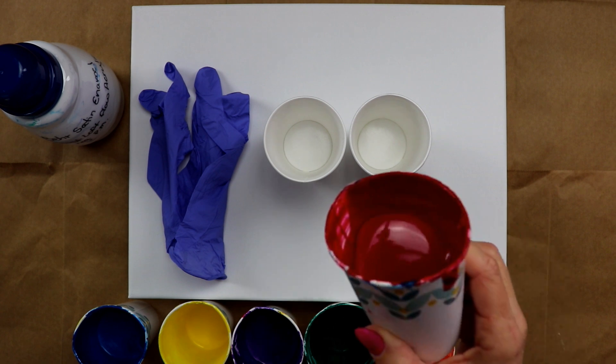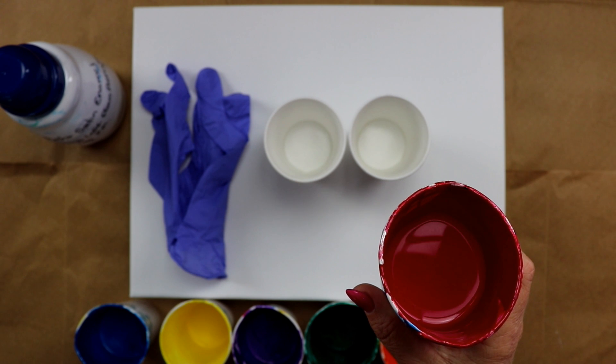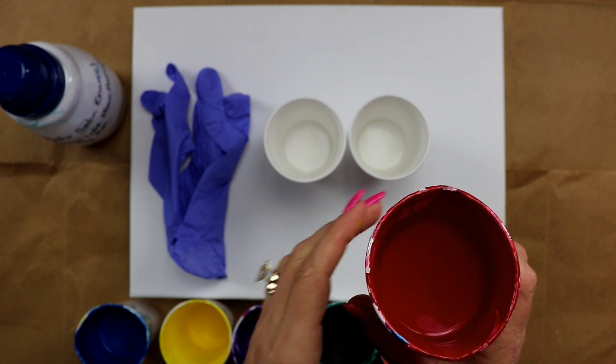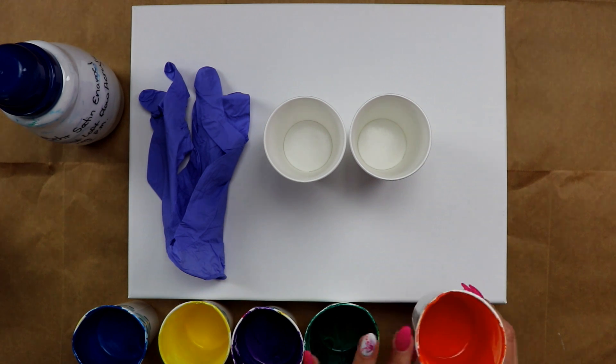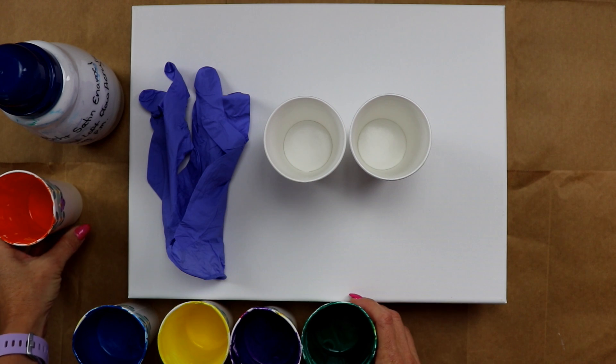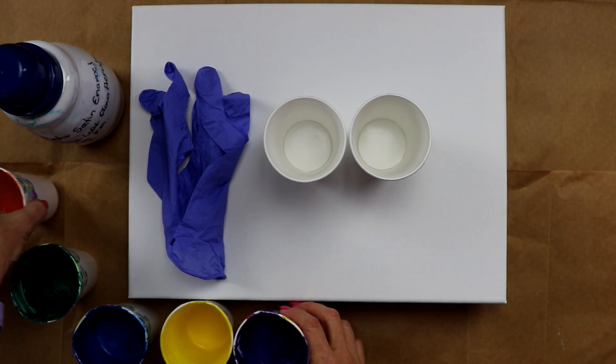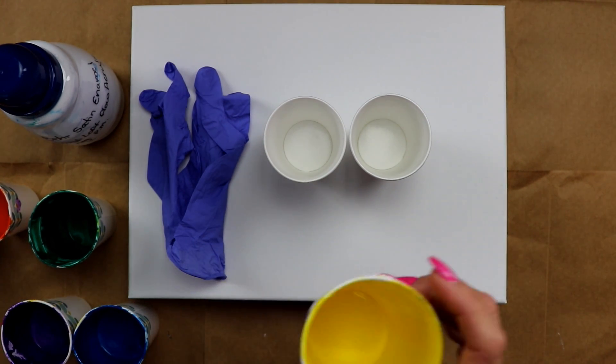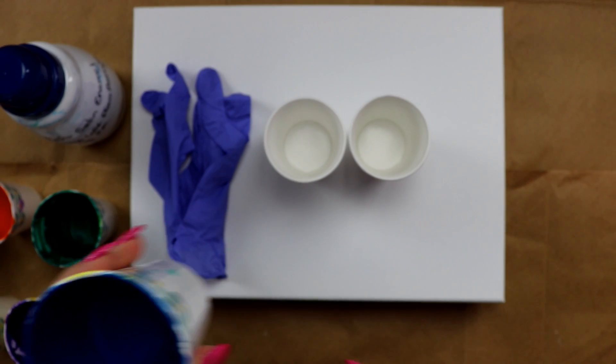So the first color I have is red from Fine Touch, it's crimson with Iridescent Medium from Artist Loft, and then the rest of the colors are from Artist Loft. This is metallic orange, metallic phthalo green, metallic purple, metallic lemon yellow, and then metallic blue.